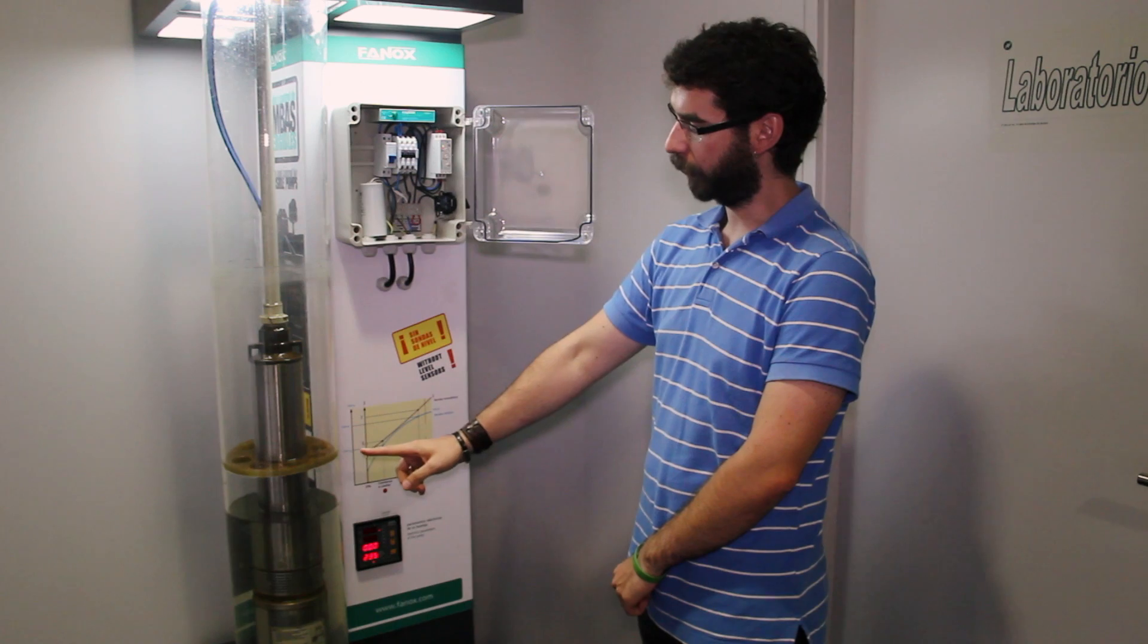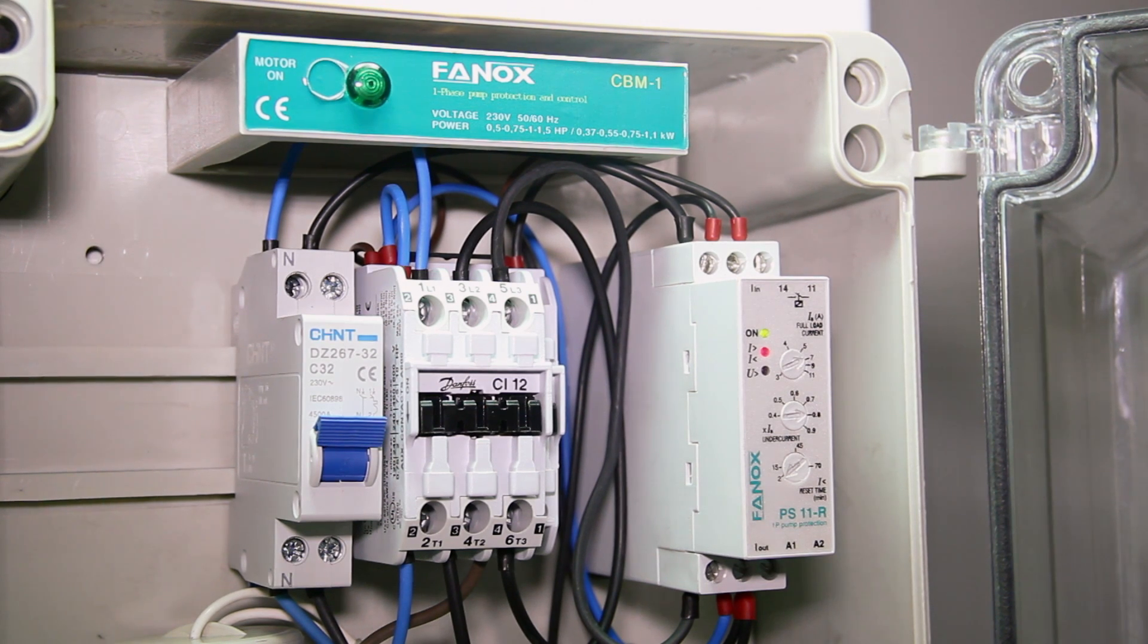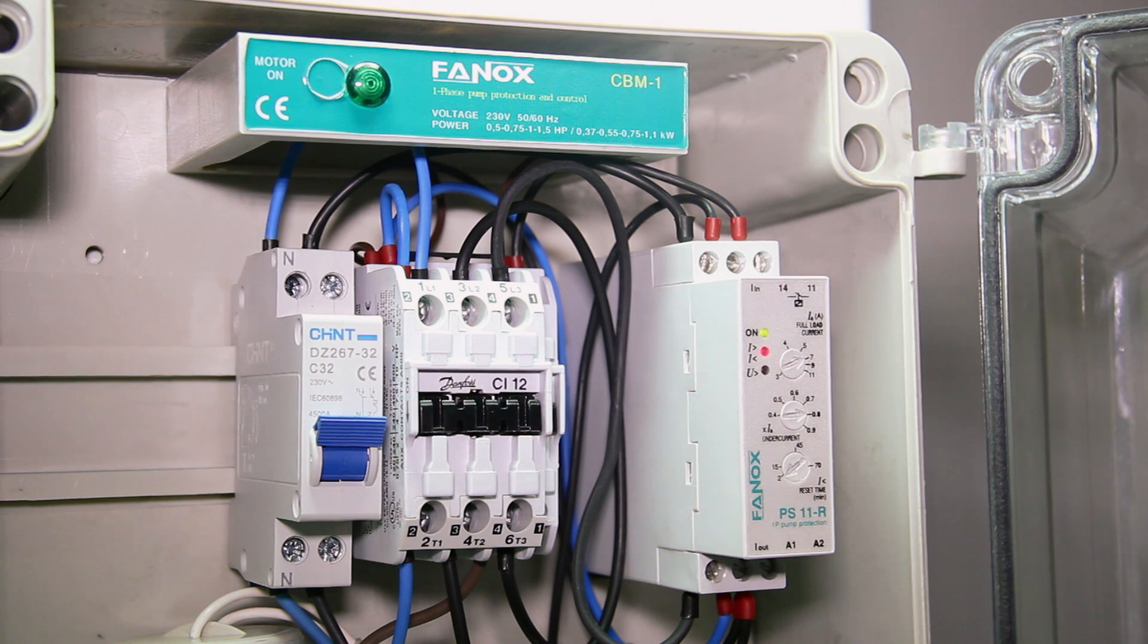Once the well has reached its adequate level of water and the adjusted time has passed, the relay will permit restarting the pump again. In the case that the well does not have enough water, the pump will be stopped again. After the adjusted time expires and the well is full, the relay permits restarting the pump again.